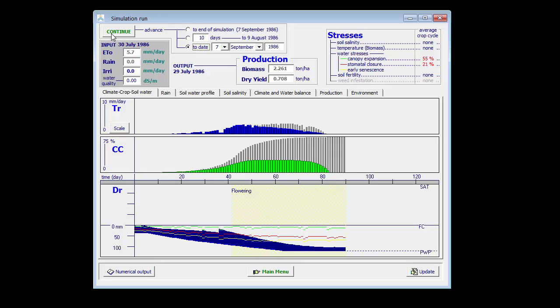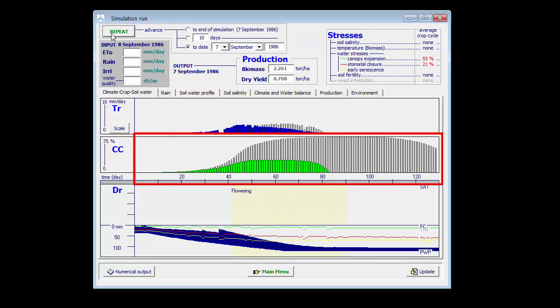While if I look at the way the canopy should have developed, maturity should have been reached after 130 days. However, due to water stress, the canopy development was completely different than described in the crop file.